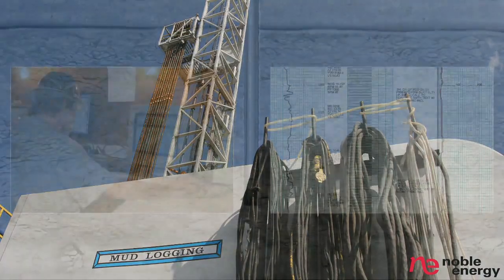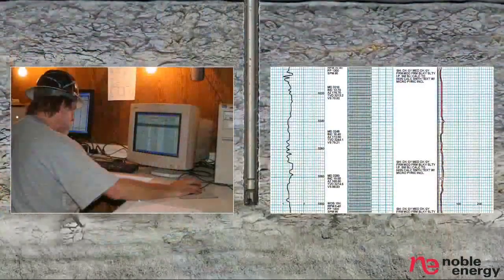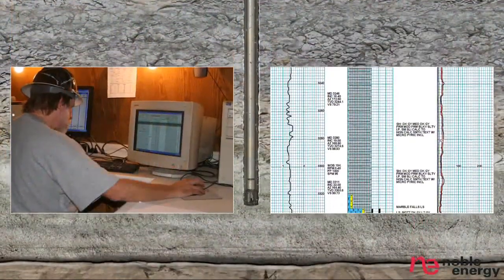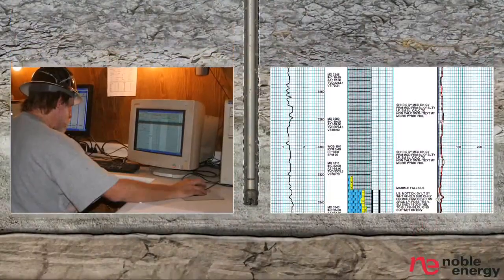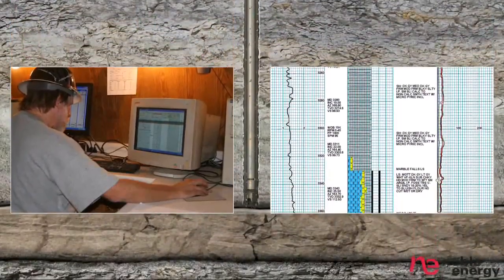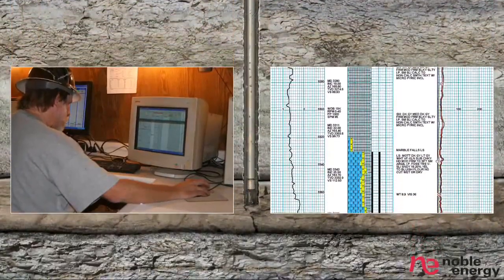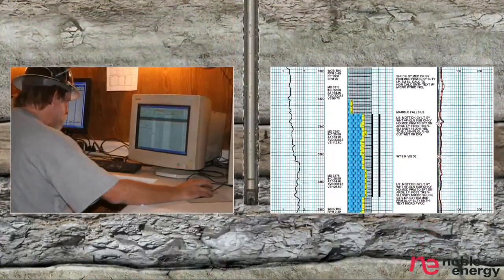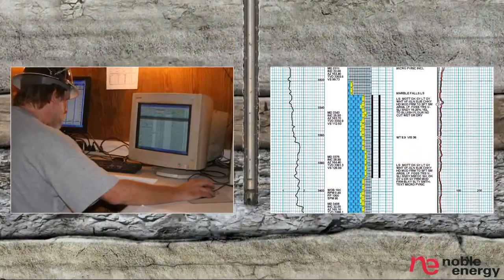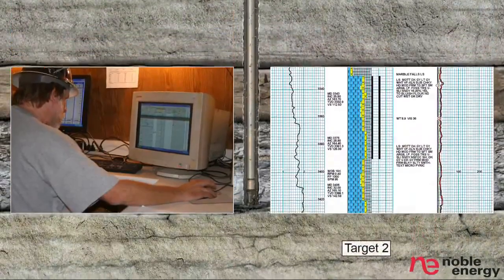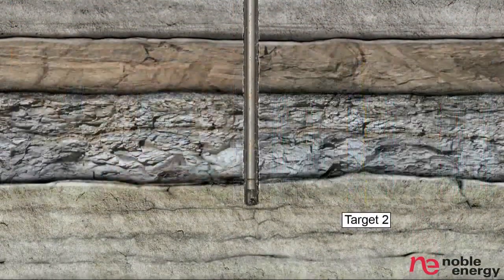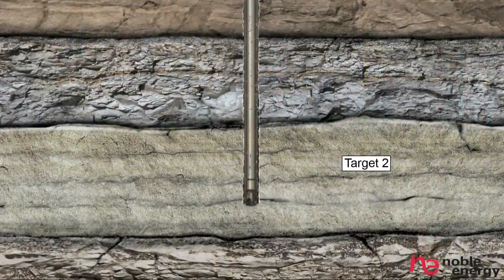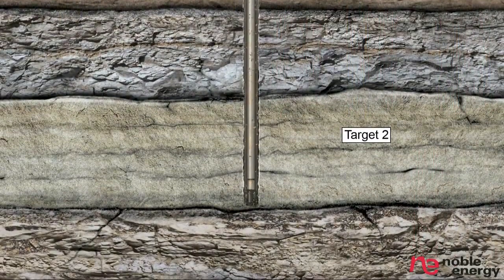Once the drill rig and other infrastructure is in place, a bit mounted on the end of the drill pipe begins drilling the well. The well is initially drilled to a designated distance below the deepest fresh water source near the surface.